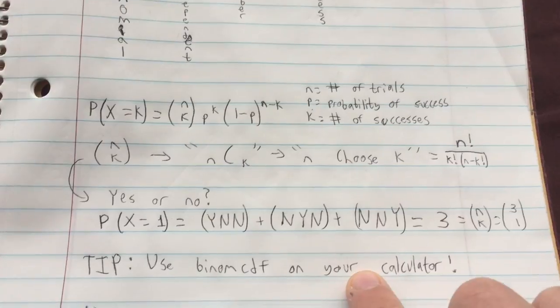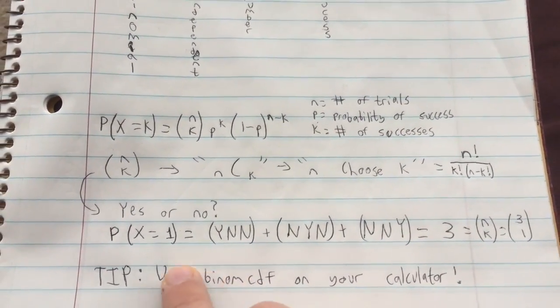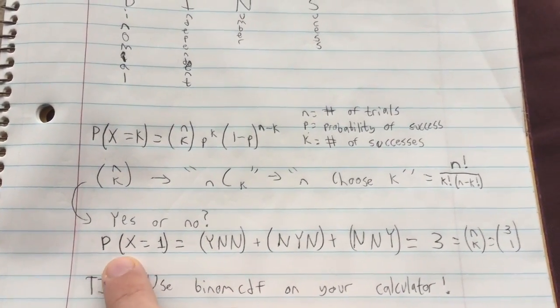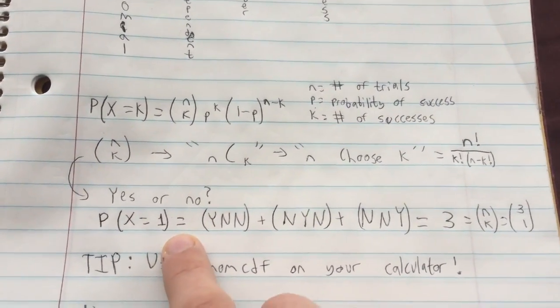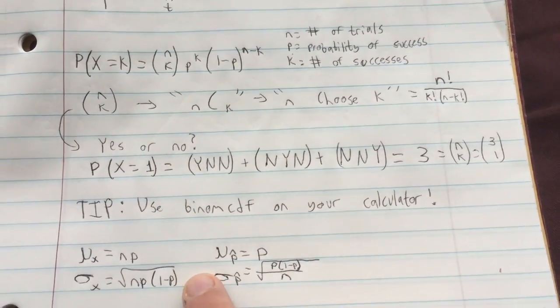But I would recommend using the calculator for the sake of time. And you can use binomial PDF if, for instance, they're asking you what's the probability that X is less than a certain number, like P of X is less than 3. That will also save you some time.